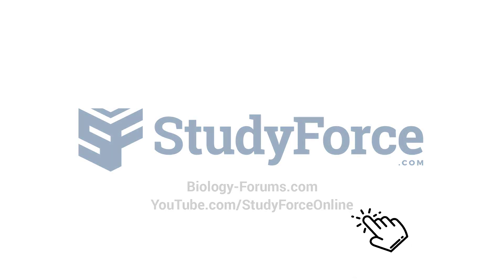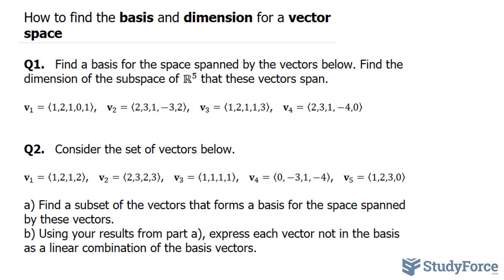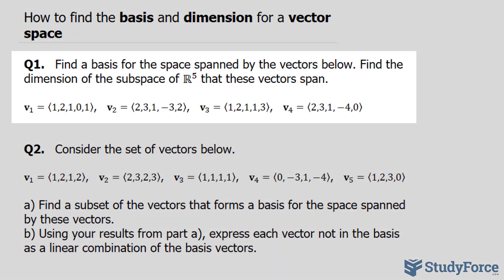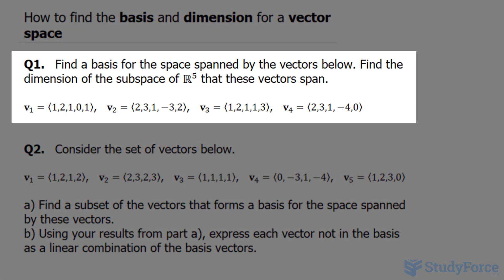In this lesson, I'll show you two examples on how to find the basis and dimension for a vector space. The question reads, find a basis for the space spanned by the vectors below. Find the dimension of the subspace of R5 that these vectors span.